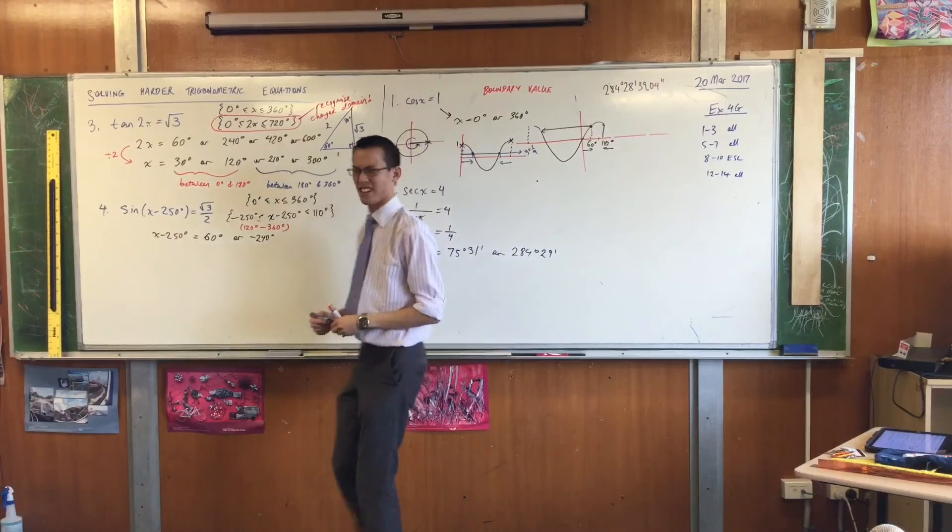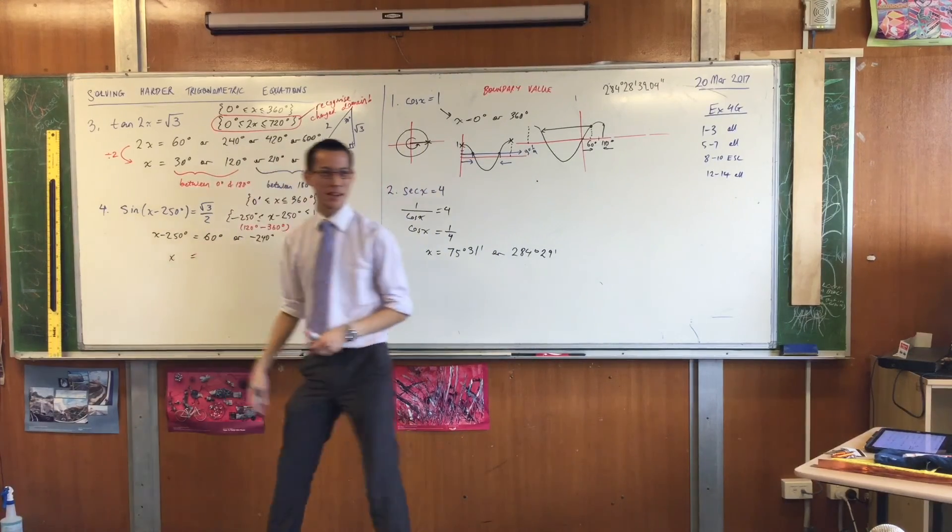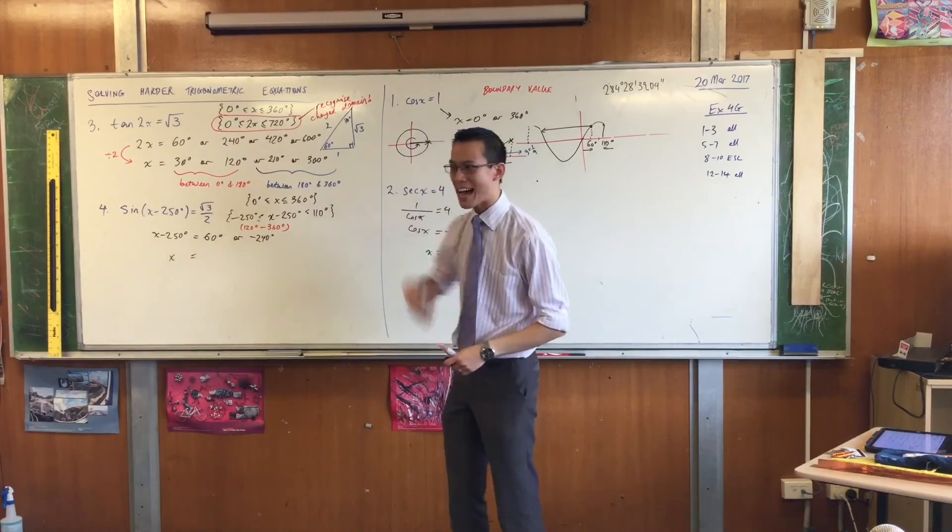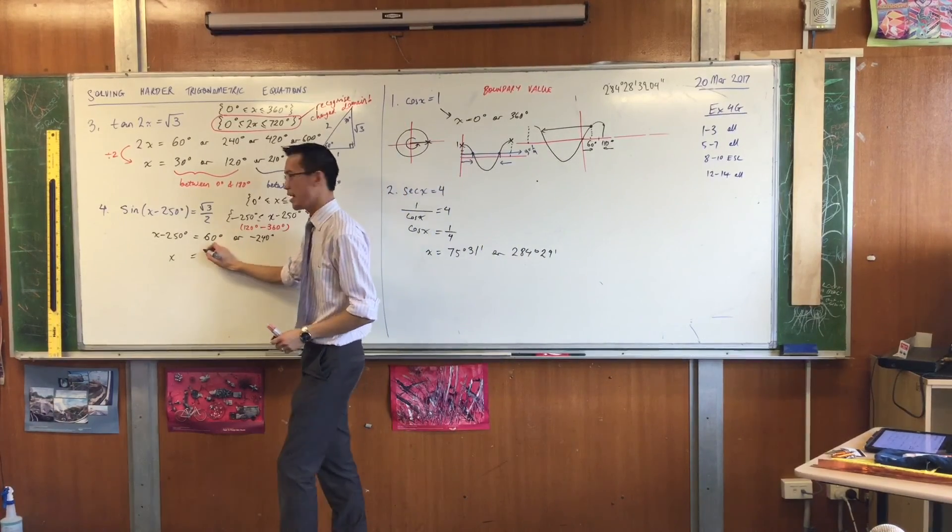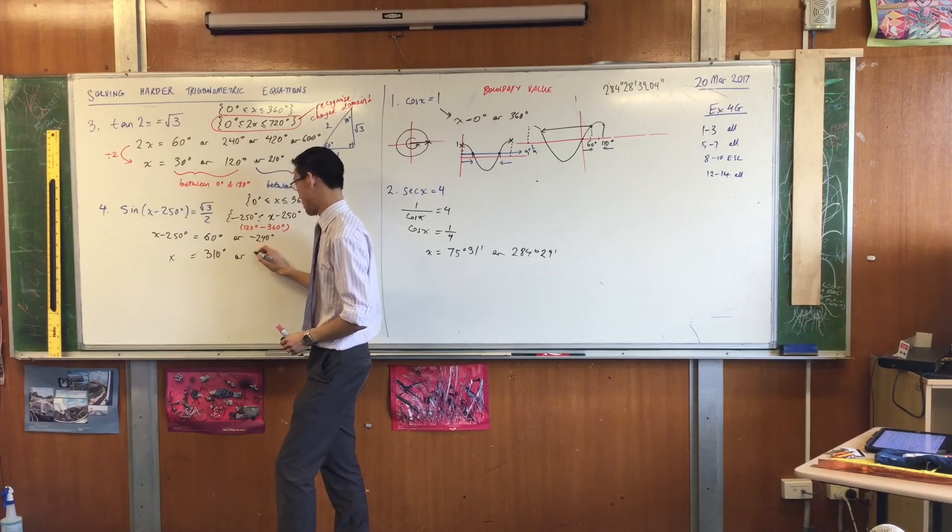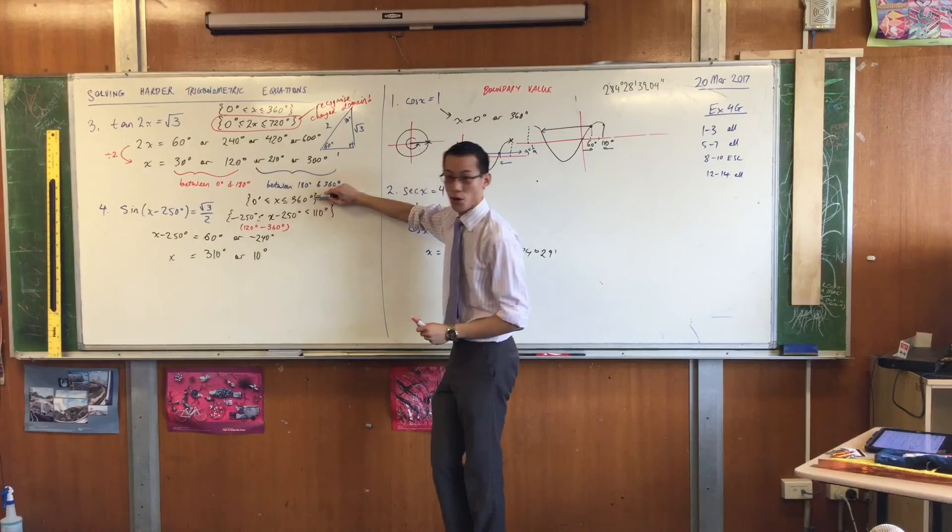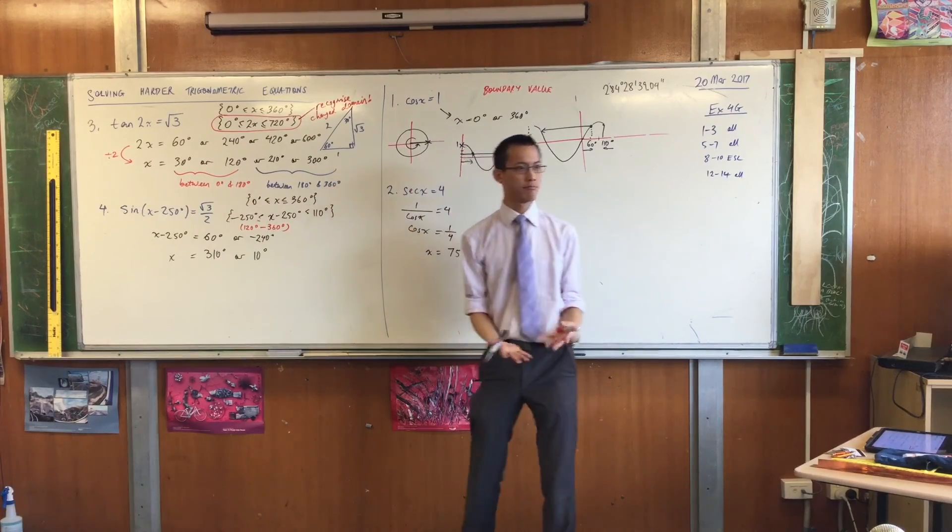I have solved for x minus 250. I don't really want x minus 250. I really want x. So what am I going to do to both sides? I'm going to add 250 degrees. So that gives me 310 or 10 degrees, both of which are in the original domain for x. Makes sense?